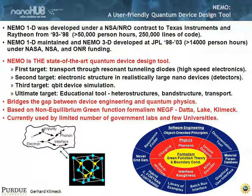There was about 50,000 person-hours spent on this code — 250,000 lines of C and Fortran code. That went on at JPL. We also developed NEMO 3D there. The first target of NEMO was transport through resonant tunneling diodes; the second target in NEMO 3D was electronic structure and realistic large devices; the third target was qubit device simulation. We're also pushing that this can be an educational tool where you can really study heterostructures, band structure, and transport. What NEMO 1D really did is bridge the gap between device engineering and quantum physics.